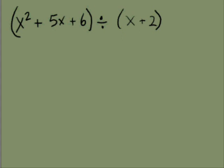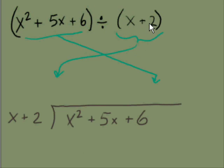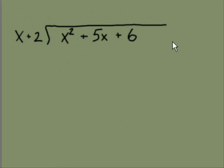And our first move is to take this divisor, the x plus 2, and that goes out in front here. And the dividend, the x squared plus 5x plus 6, goes inside. And we have a long division problem set up. OK, so there it is.